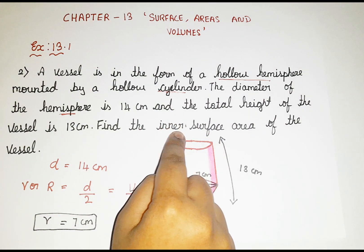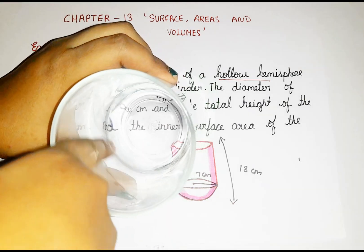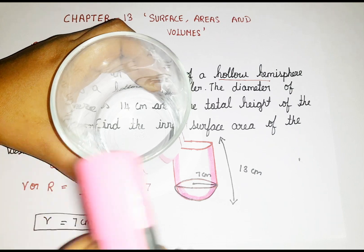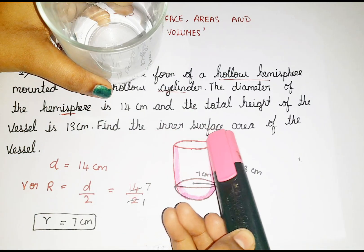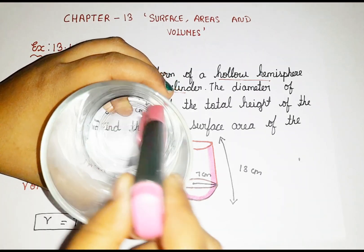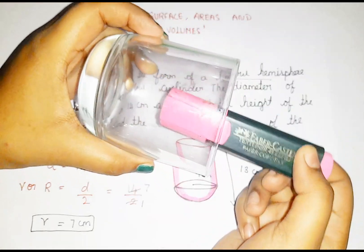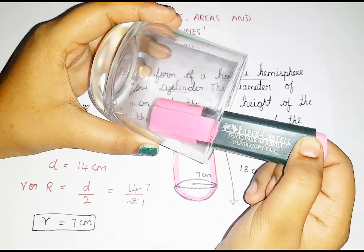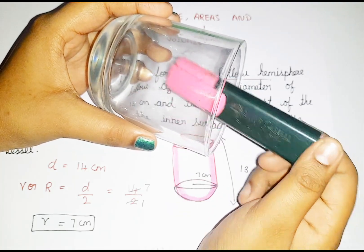According to the question, we are supposed to find the inner surface area. Look at the glass cup — we are supposed to find this inner part. If I ask you guys to paint this glass cup from the inside, you would paint only the curved surface inside. While painting, you are painting the curved surface of the cylinder. So we need the curved surface area of the cylinder.